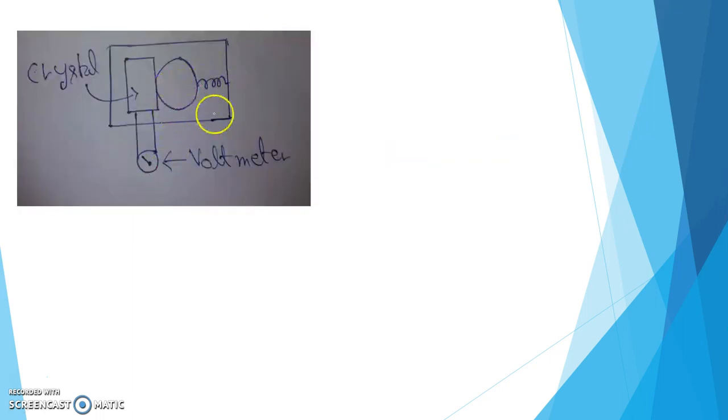See, this is the simple diagram of piezoelectric accelerometer. Here the piezoelectric crystal is placed. Here one mass M is attached with a spring with this wall of the box. And the mass is in contact with the crystal.